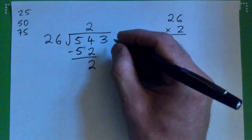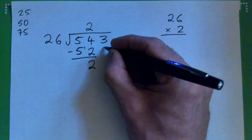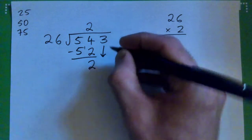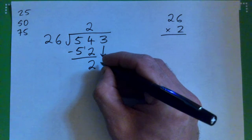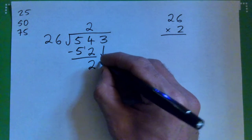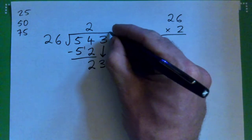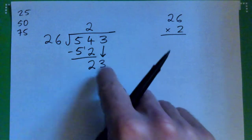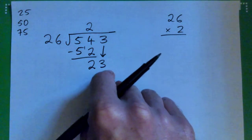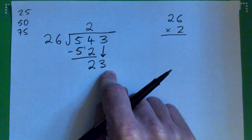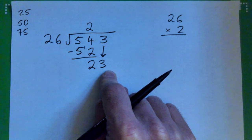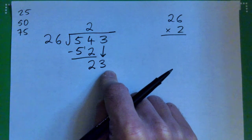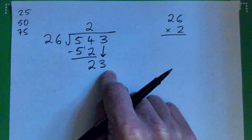And then we can bring this 3 down — 23, right? Now here's a kind of a funny one. 26 into 23 goes how many times? Does it even go once? Or does it not go at all?